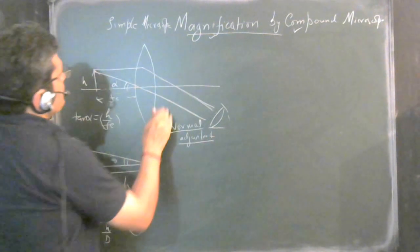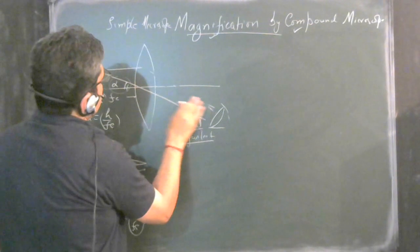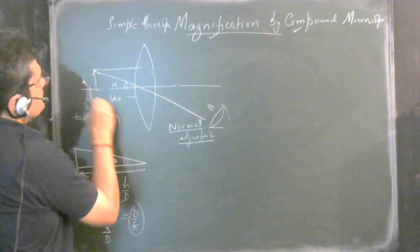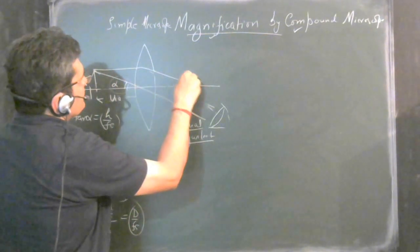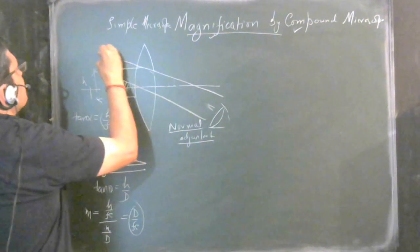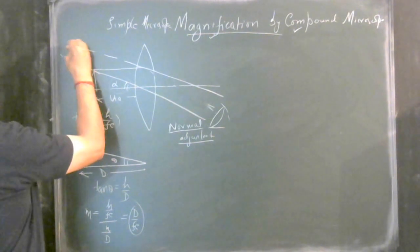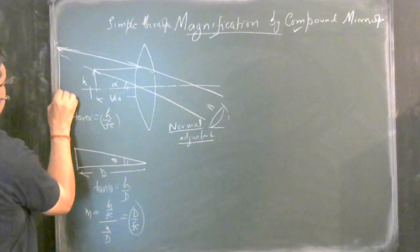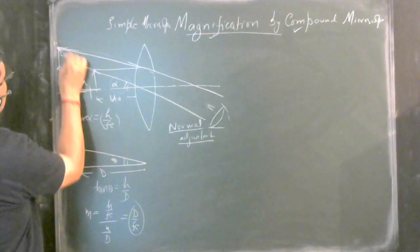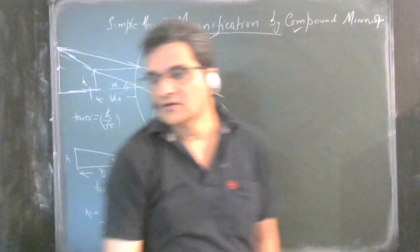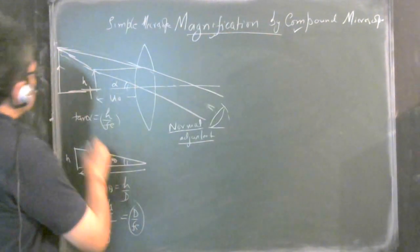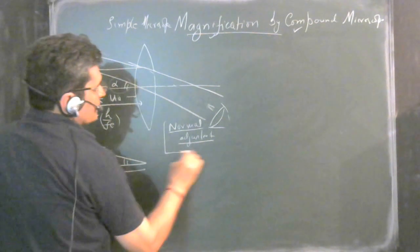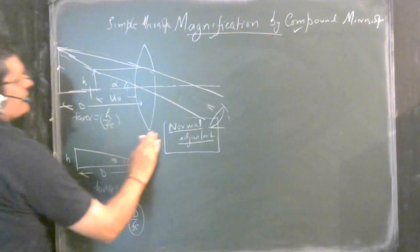Now suppose we take a case where the object is placed at some distance ue which is less than Fe, and we adjust it in such a manner that the image is formed at D — the distance of nearest approach. The image is formed at D, and we call this case 'adjustment,' as opposed to normal adjustment.